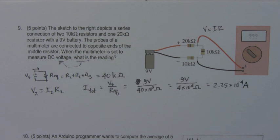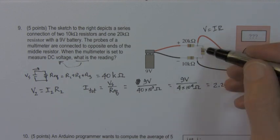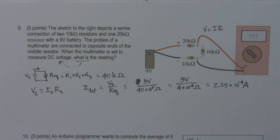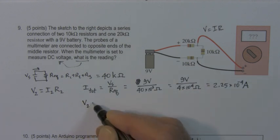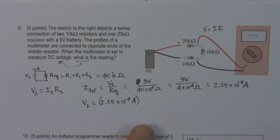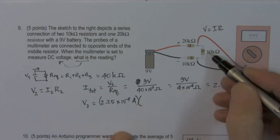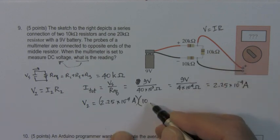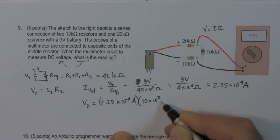So this is 10 to the minus 4, and that's amps. Very small quantity. That's the total current. That's the current through this resistor that we want to find. So therefore, V2 is equal to 2.25 times 10 to the minus 4 amps times the resistance of that resistor, which is 10k, so 10 times 10 to the 3 ohms.